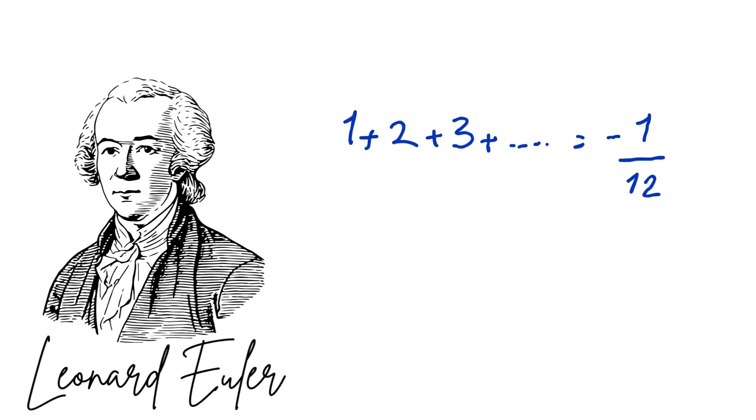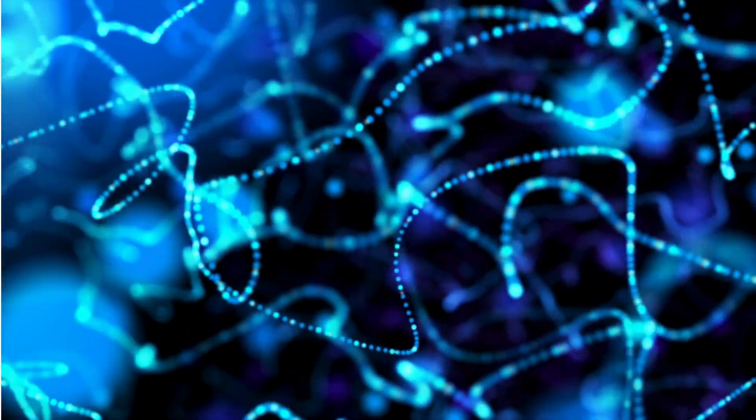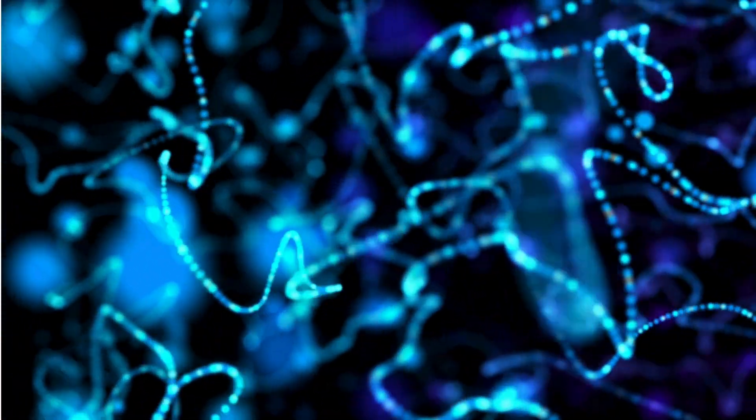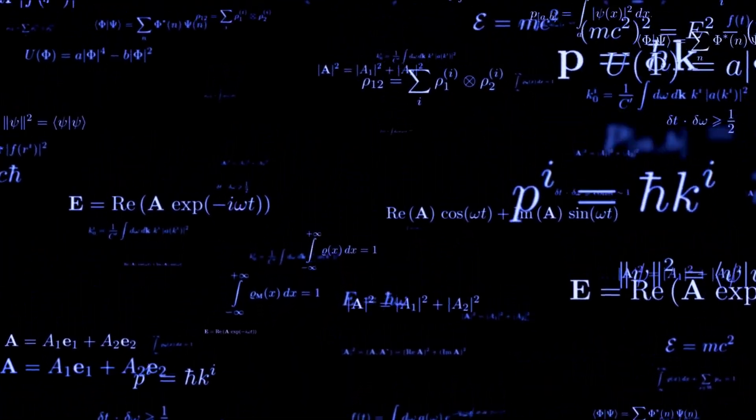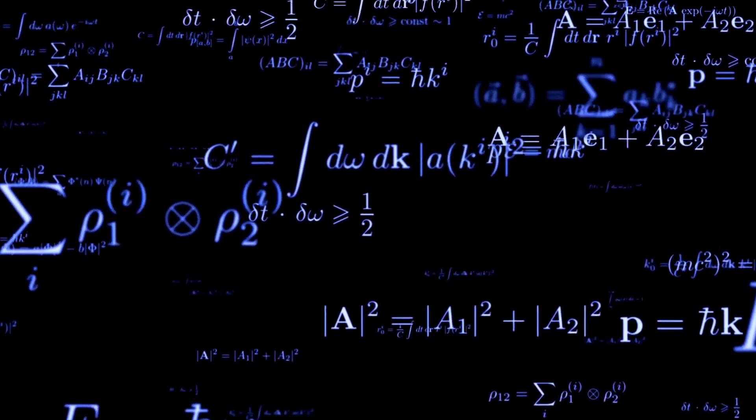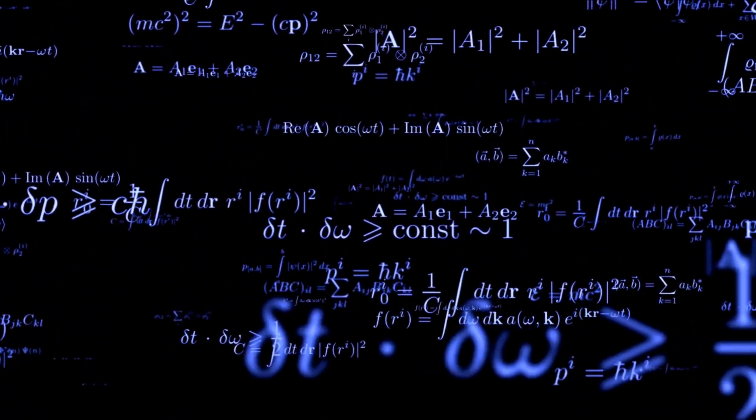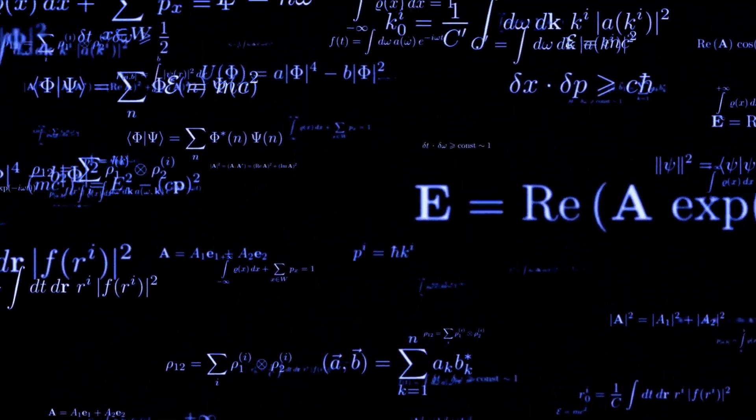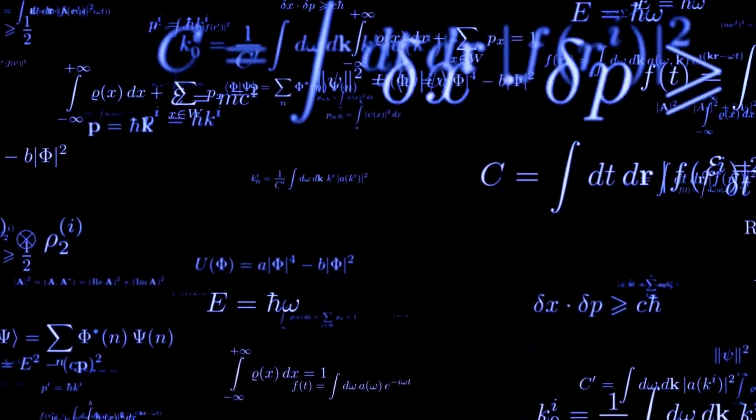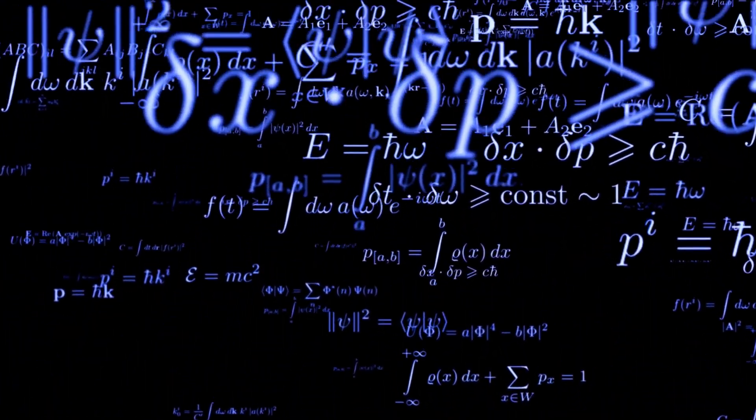This is not a sum in the usual sense. It doesn't converge normally. But in modern view, using zeta function regularization, this value does appear in quantum physics and string theory. Euler didn't have this tool. He was navigating the unknown, using intuition over rigor. His result is a perfect example of why analysis had to be rebuilt with precise definitions.